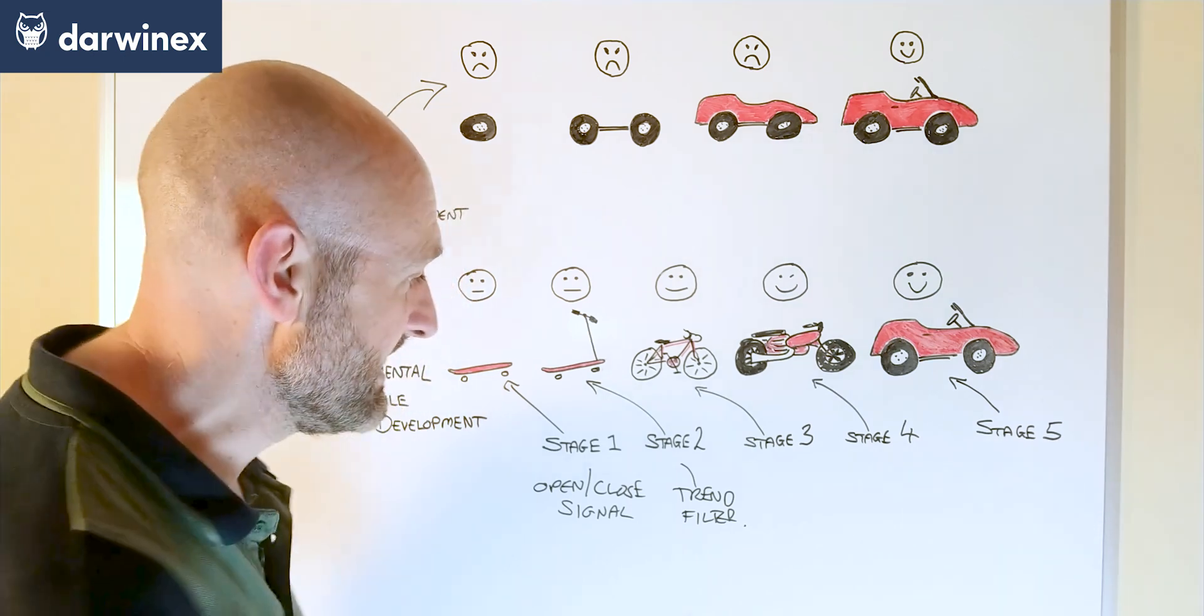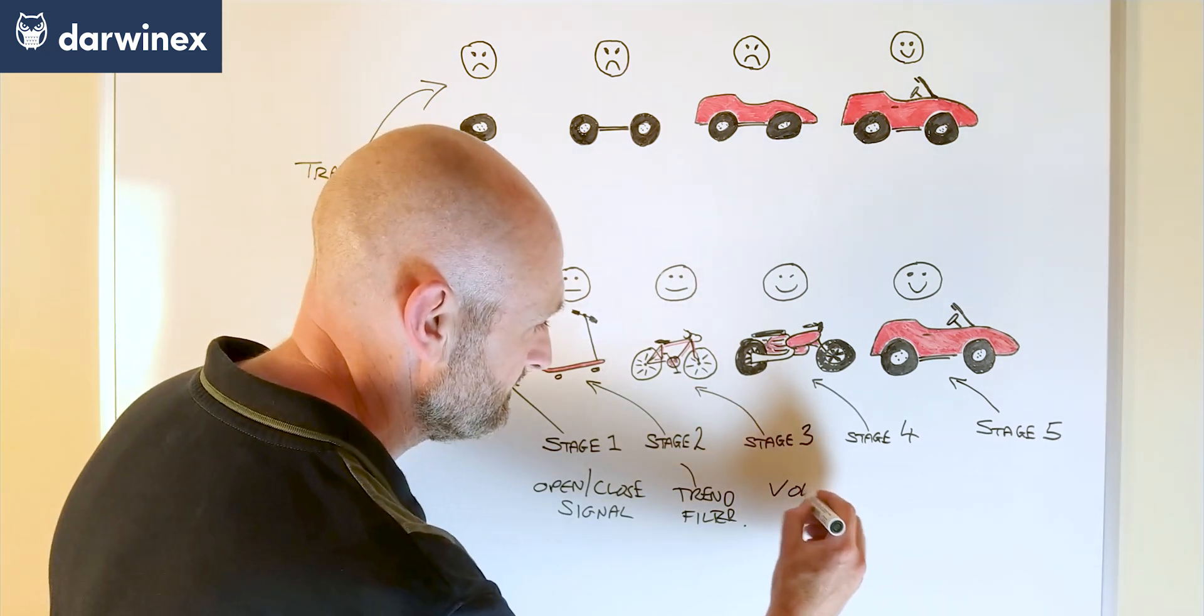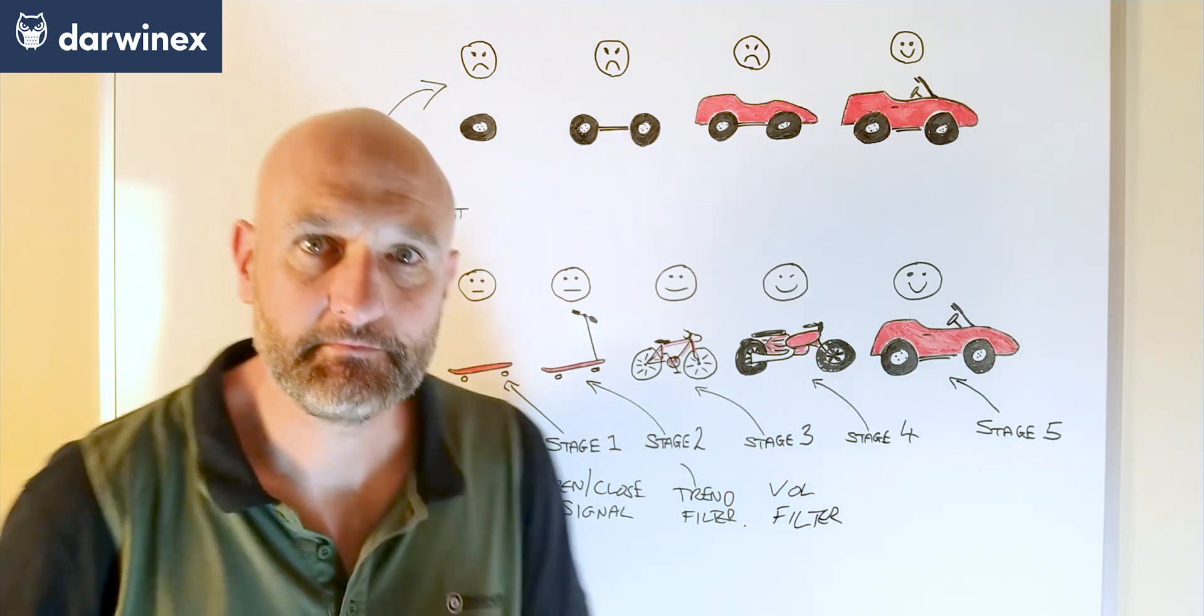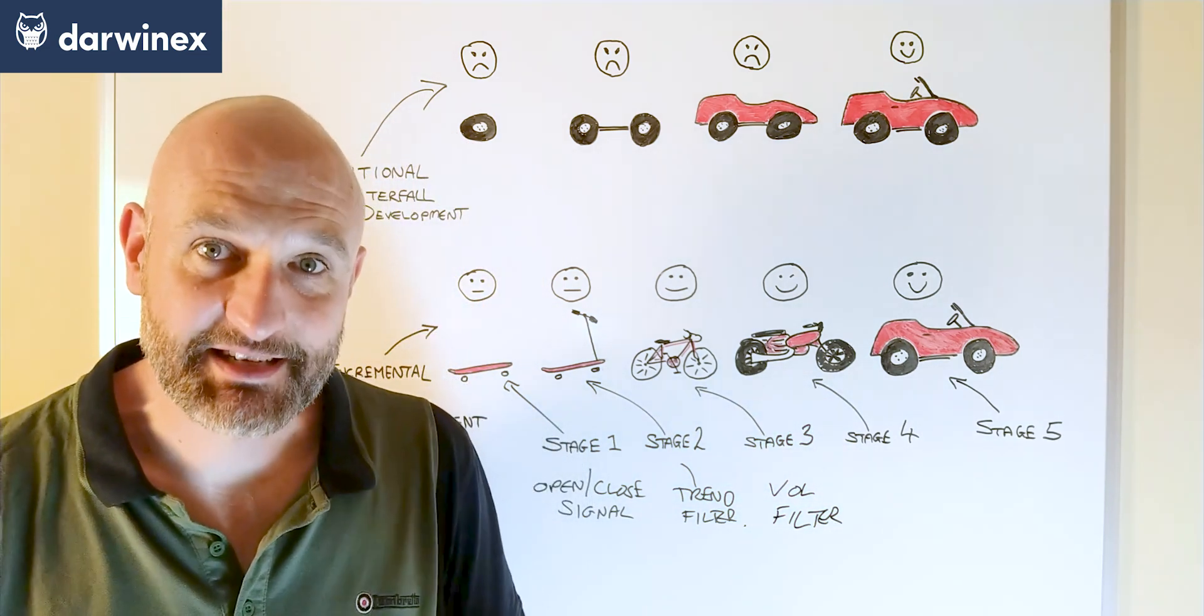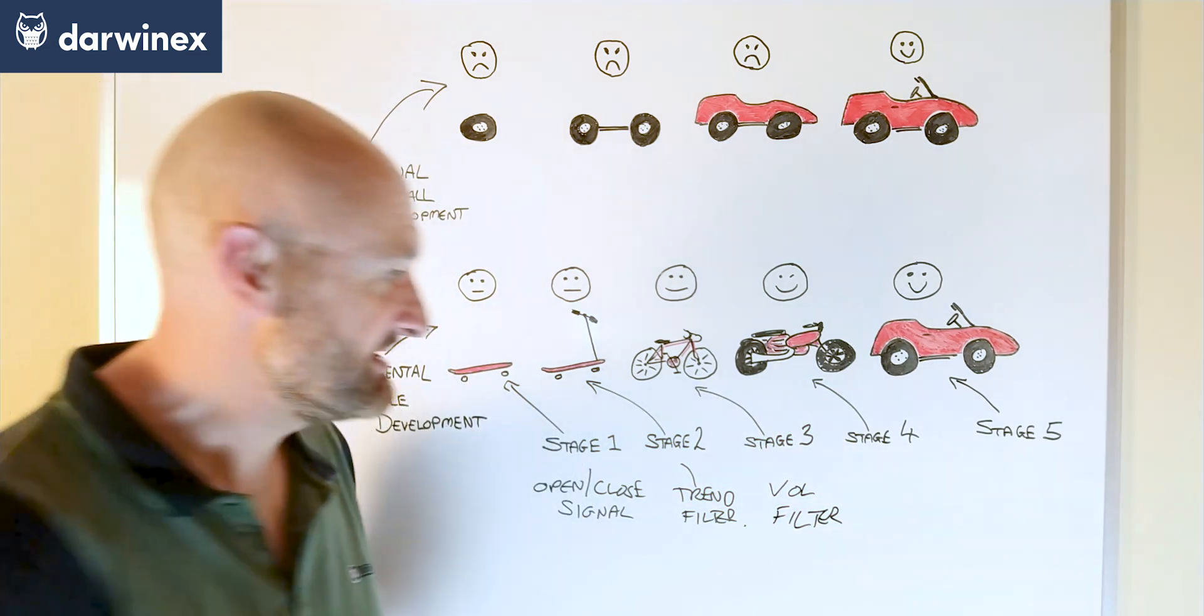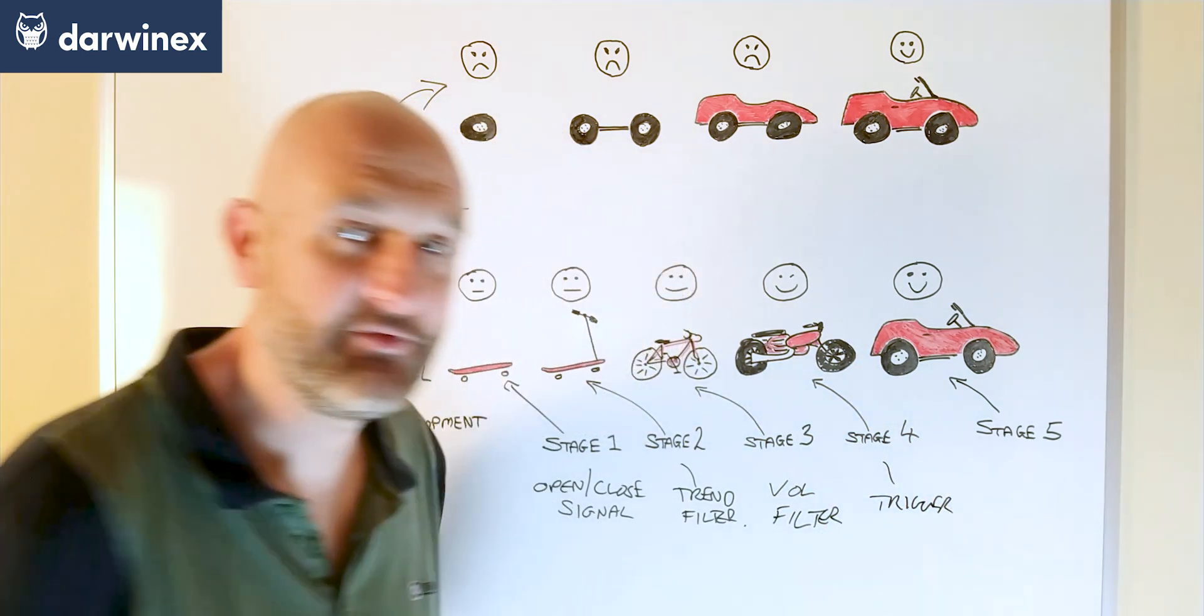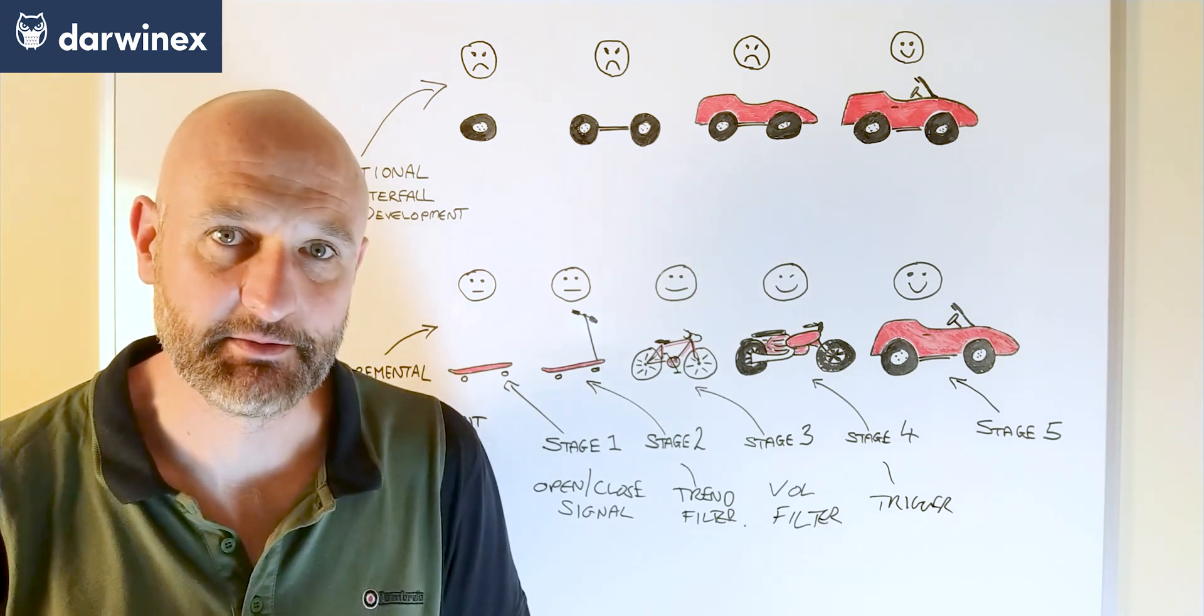So, for example, this might be a volatility filter. And after that, on the next stage, we might implement a trigger in order to fine tune the entry of our system.